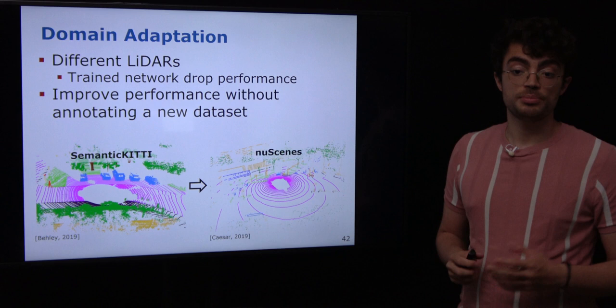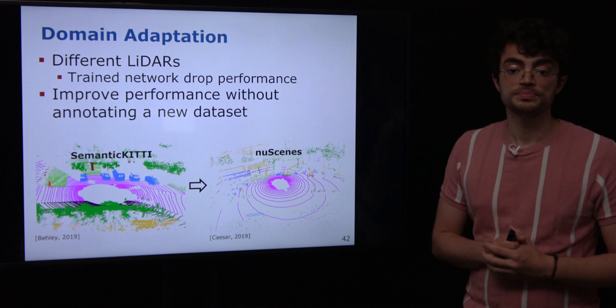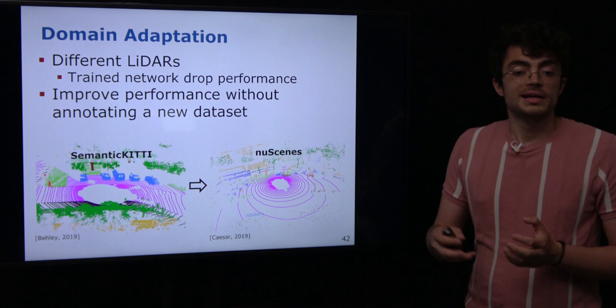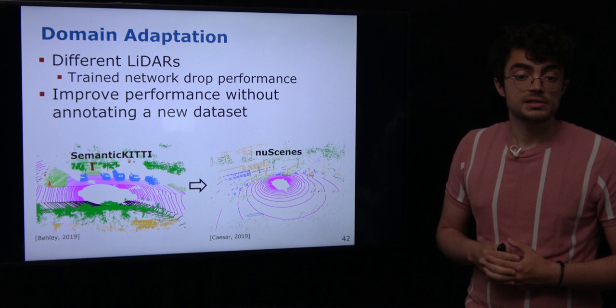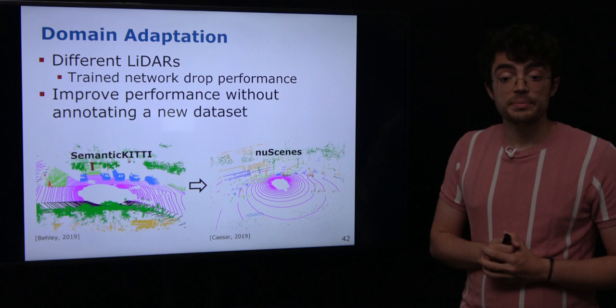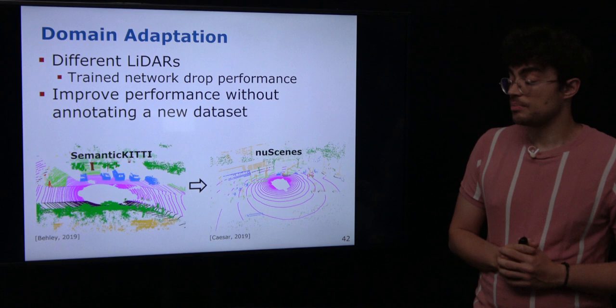To deal with the problem of domain shift, we can think of adapting the trained model to cope with this domain shift problem, ideally without having to label more data. Using only the source domain labels, we try to adapt the model to perform well also on the target dataset.